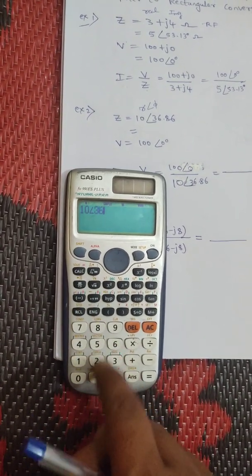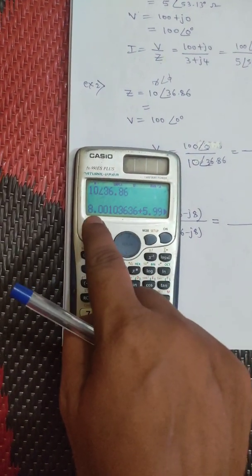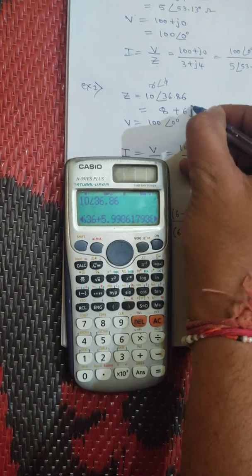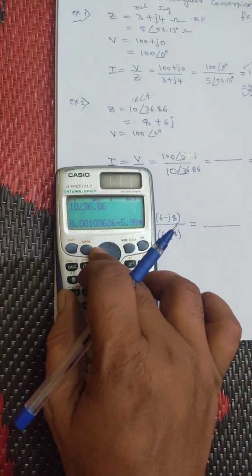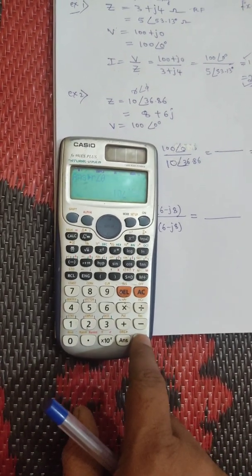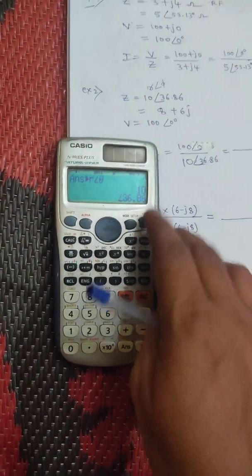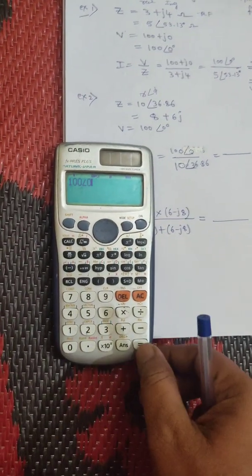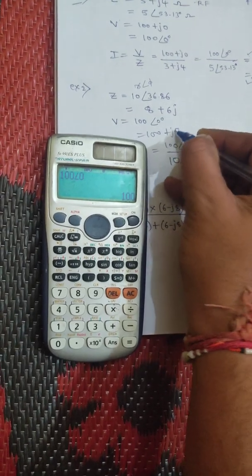Press equals and it directly shows in rectangular form: 8 plus 5.999j. We can approximate this as 8 plus 6j. If you want to see the answer in polar form again, press Shift, 2, then 3 — it will show the same answer in polar form. You can convert in both forms and vice versa. Now convert 100 at an angle 0 degrees: enter 100, press Shift and the angle button, enter 0, press equals. It shows 100 — the imaginary part is not shown, so you can write plus j0.